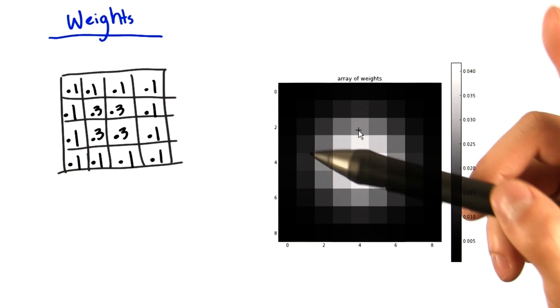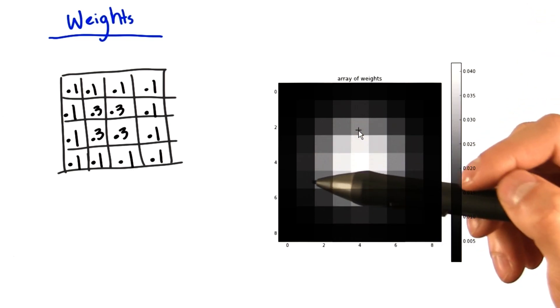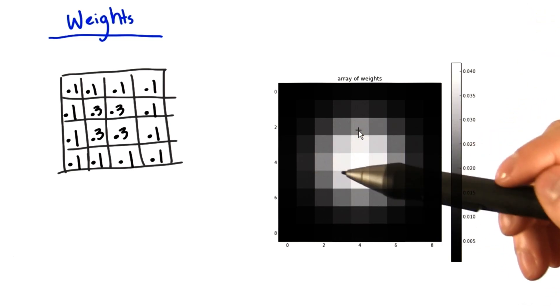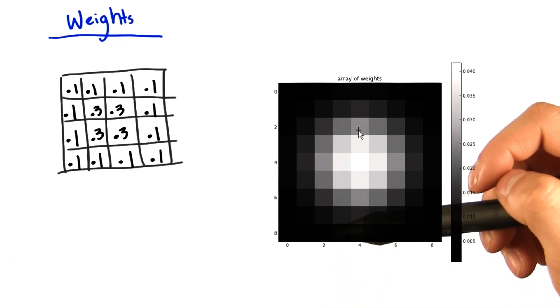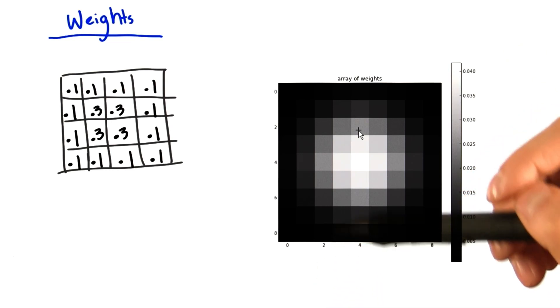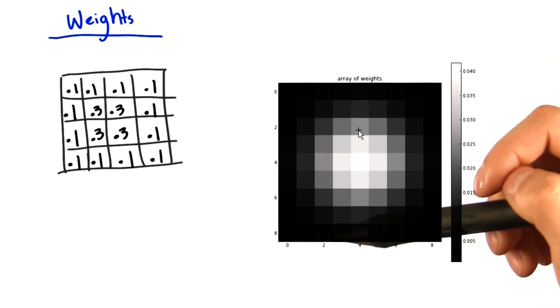And also here is a note. We will blur color images by blurring each color channel independently. And we will include a more detailed mathematical formula on blurring computations in the instructor comments.